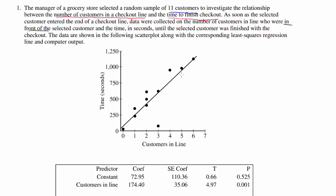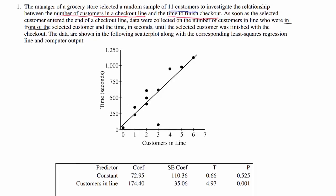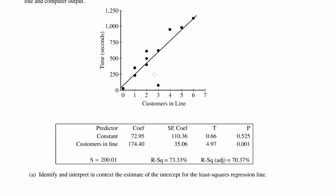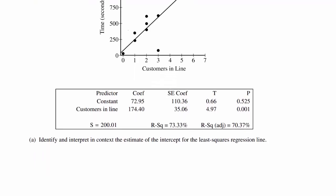The data are shown in the following scatterplot along with the corresponding least squares regression line and the computer output. And we have this very nice graph and very nice table given to us. Let's go on to part A.